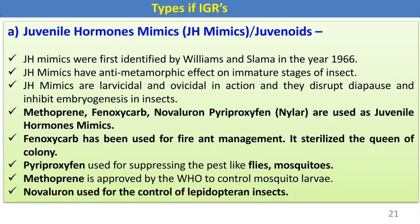Types of insect growth regulators: The first type is juvenile hormone mimics, based on Wigglesworth's work. Examples include Methoprene, Fenoxycarb, Novaluron, and Pyriproxyfen. Fenoxycarb is specially used for fire ant management and for sterilizing the queen in termite colonies. Pyriproxyfen is used against flies and mosquitoes, Methoprene is used against mosquito larvae, and Novaluron is used for stored product insects.